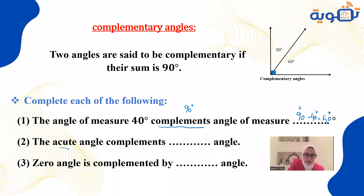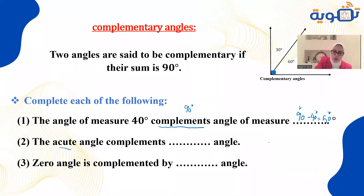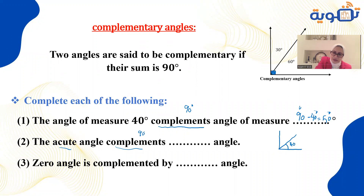What type of angle complements an acute angle? I prefer to draw: an acute angle, say 40 degrees. Its complement must bring it to 90, so it needs 50 degrees. That 50-degree angle is also acute. So an acute angle's complement is also an acute angle.